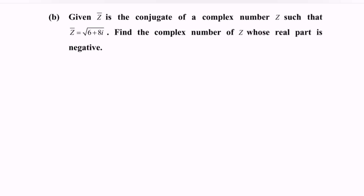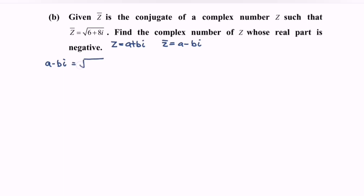So let's say z equals a plus bi, and z-bar equals a minus bi. Now substitute into the given equation, so a minus bi equals the square root of 6 plus 8i.